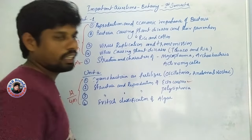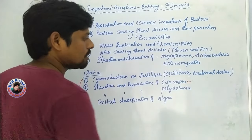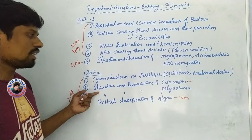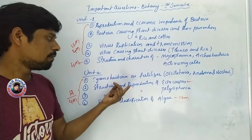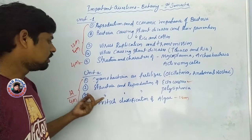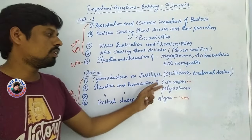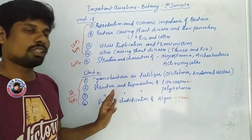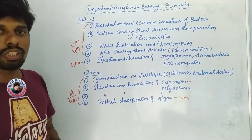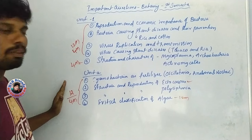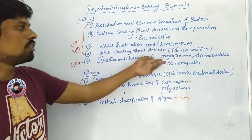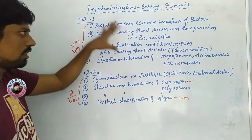The structure and reproduction of Ectocarpus is a topic. Structure and reproduction of Polysiphonia is a 12-mark question. The FH classification is also a 12-mark question. Structure of Ectocarpus alone is 4 marks, reproduction of Ectocarpus is 4 marks, and structure of Polysiphonia is 4 marks.